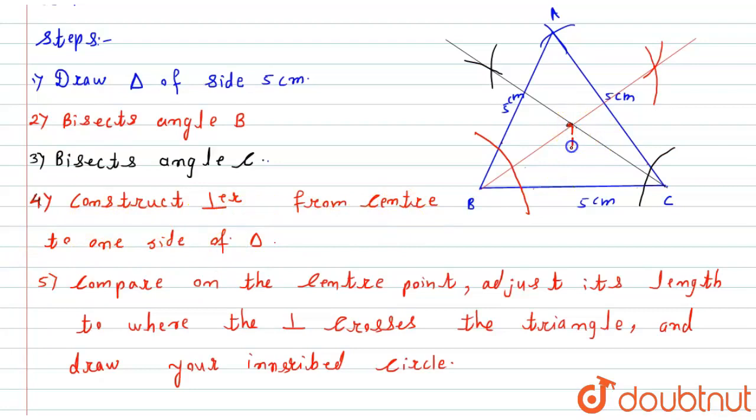So here I will construct a perpendicular onto one side of the triangle, which intersects one side of this triangle at a point. Now, with the compass on the center point, adjust its length to where the perpendicular crosses the triangle and draw your inscribed circle.